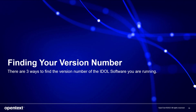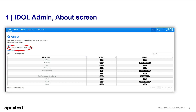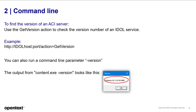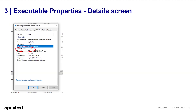Let's talk about a quick guide for determining what version of EIDL you are currently running. You can see it in your admin about screen. You can also go to the command line to find out which version you are running, and your executable properties details screen will also tell you which product version you're running.